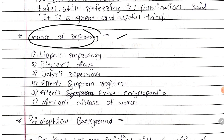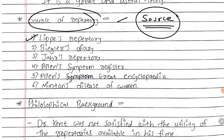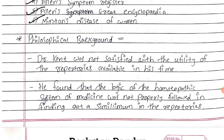Sources of the repertory: The sources are very important and we must remember all of them. First, Lippi's repertory. Second, Bigler's diary. Third, Jha's repertory. Fourth, Allen's Symptom Register. Fifth, Allen's Great Encyclopedia. And the sixth, Minton's Disease of Women.